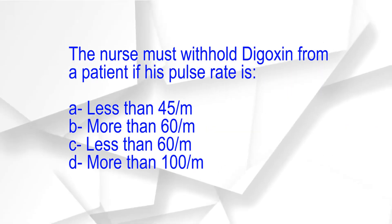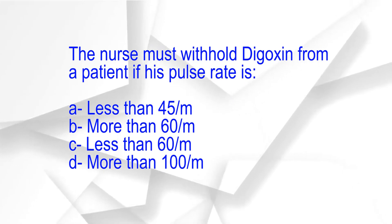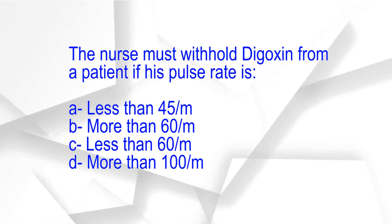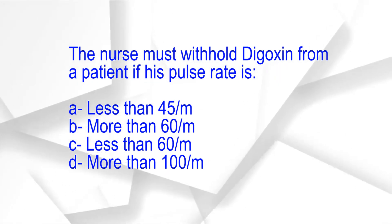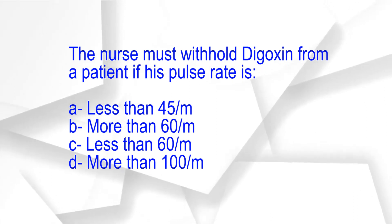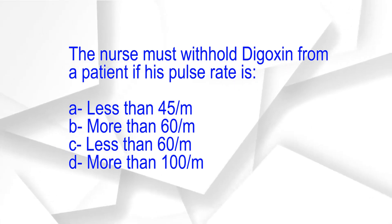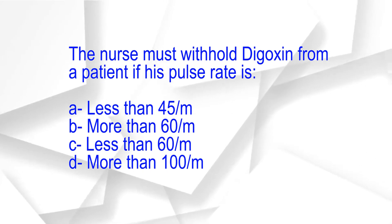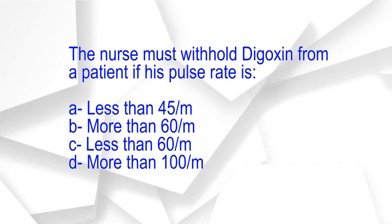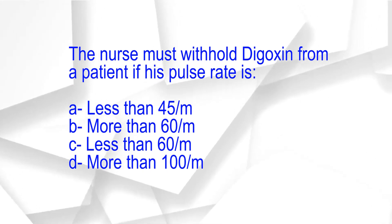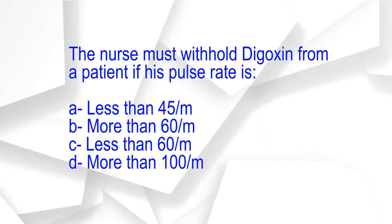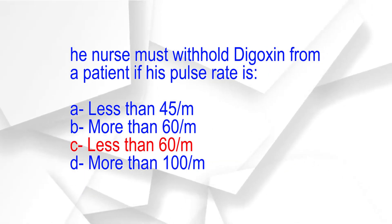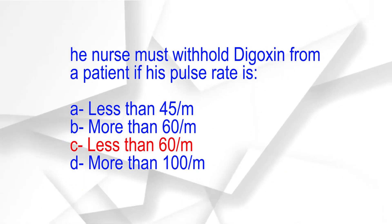The nurse must withhold digoxin from a patient if his pulse rate is: A. Less than 45 per minute. B. More than 60 per minute. C. Less than 60 per minute. D. More than 100 per minute. The correct answer is option C: Less than 60 per minute.